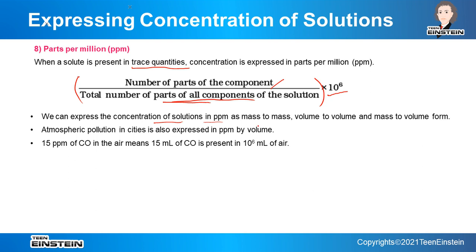We can express concentration in PPM as mass to mass, volume to volume, or mass to volume — all are possible. For example, when we consider atmospheric pollution, suppose there is some impurity present in the atmosphere in a very minute quantity — pollution in cities can be expressed in PPM by volume.